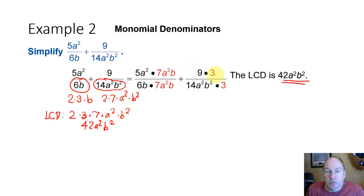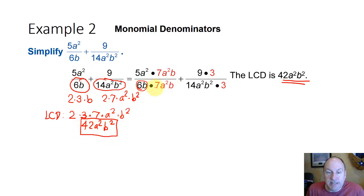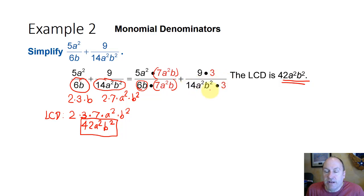So the least common denominator is 2 times 3 times 7 times a squared times b squared, or 42a squared b squared. To get a common denominator for both terms, we multiply each rational term by the factors it's missing. The first denominator 6b lacks 7a squared b, so we multiply the numerator and denominator of the first fraction by 7a squared b. Similarly, to make 42a squared b squared from the second denominator 14a squared b squared, we multiply numerator and denominator by just 3.